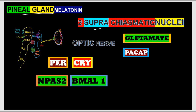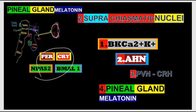In the SCN, the neurotransmitters released from the optic nerve are glutamate and PACAP (pituitary adenylate cyclase-activating protein). These increase important proteins inside SCN cells: period proteins, cryptochrome proteins (like the timeless protein in Drosophila), NPAS2, and BMAL1. These proteins are transcription factors that act on DNA and serve as the molecular basis of the biological clock.